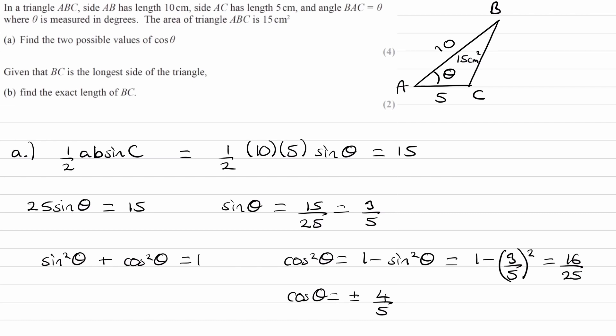That's probably the easiest way to work out the two possible values of cos theta. You could also work out the angle from sine theta equals three over five. Once you've worked out your principal value, you would then work out your second angle. Once you have your two values between zero and 180, put them both into cos theta and you will get plus or minus four over five.